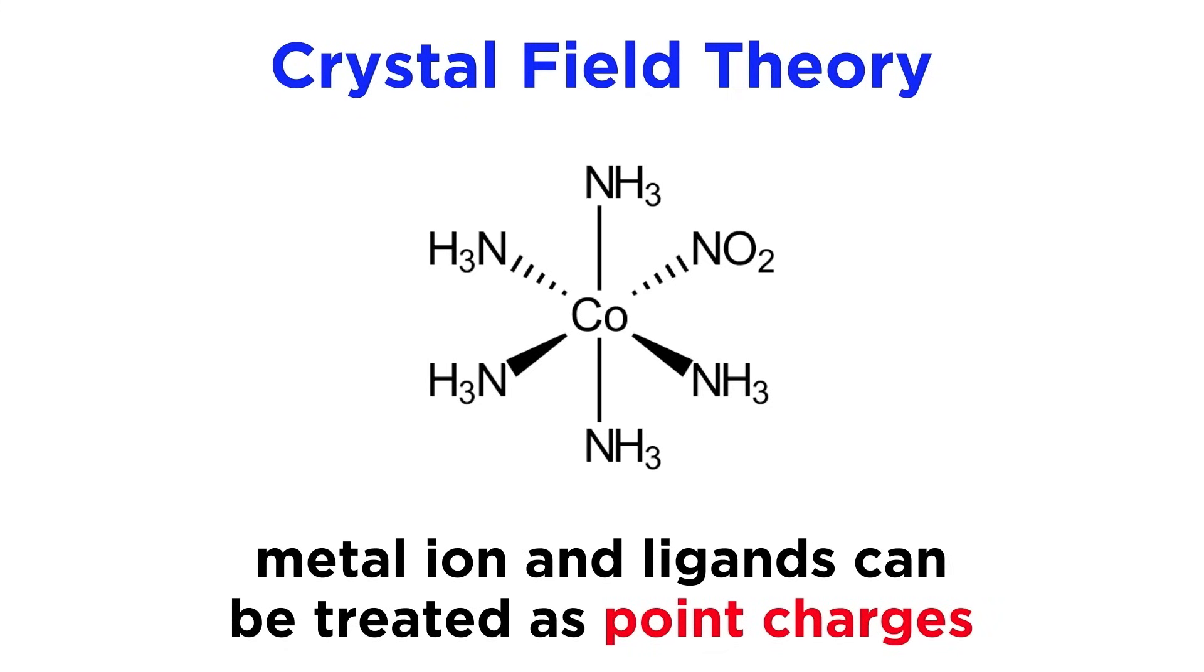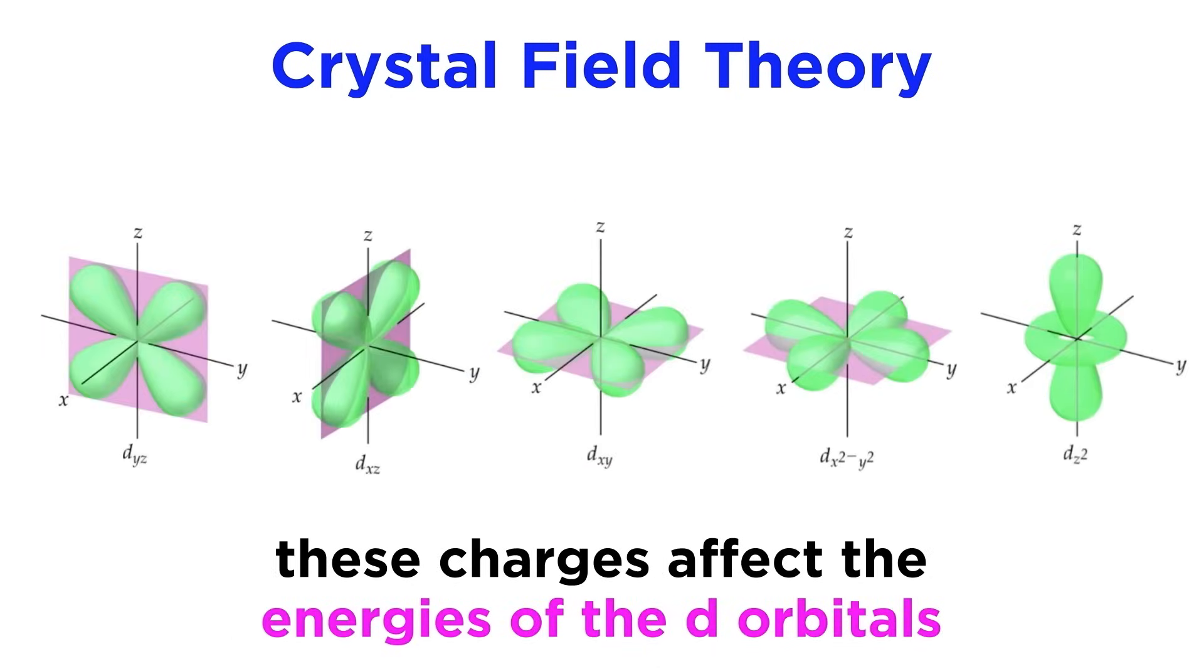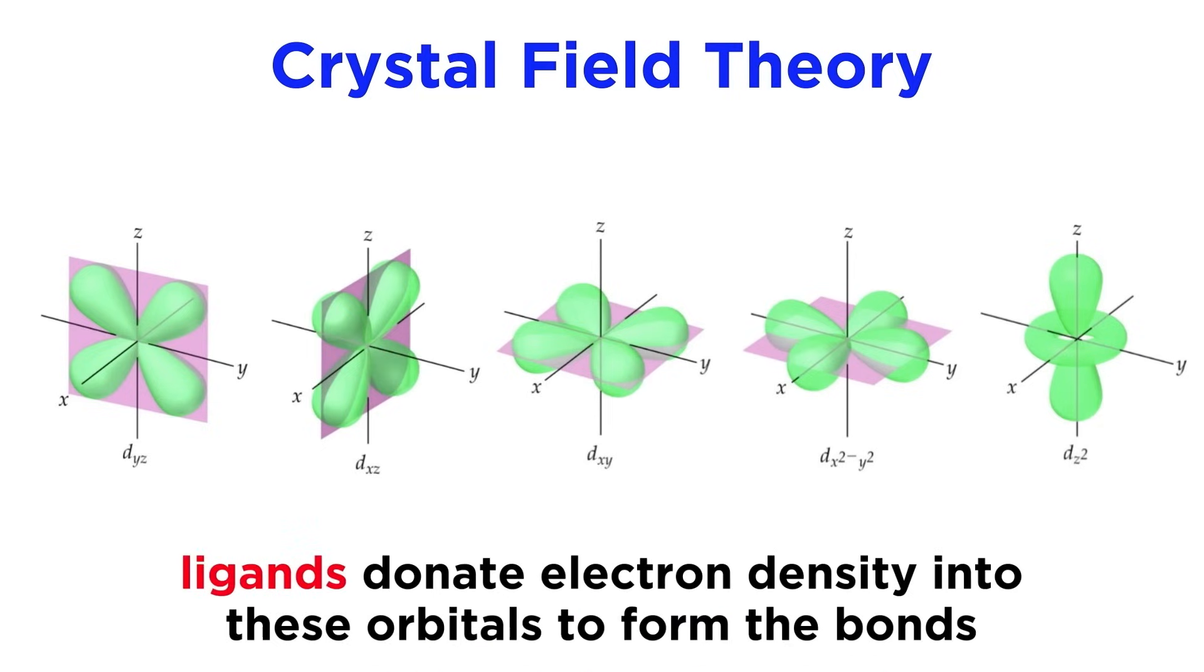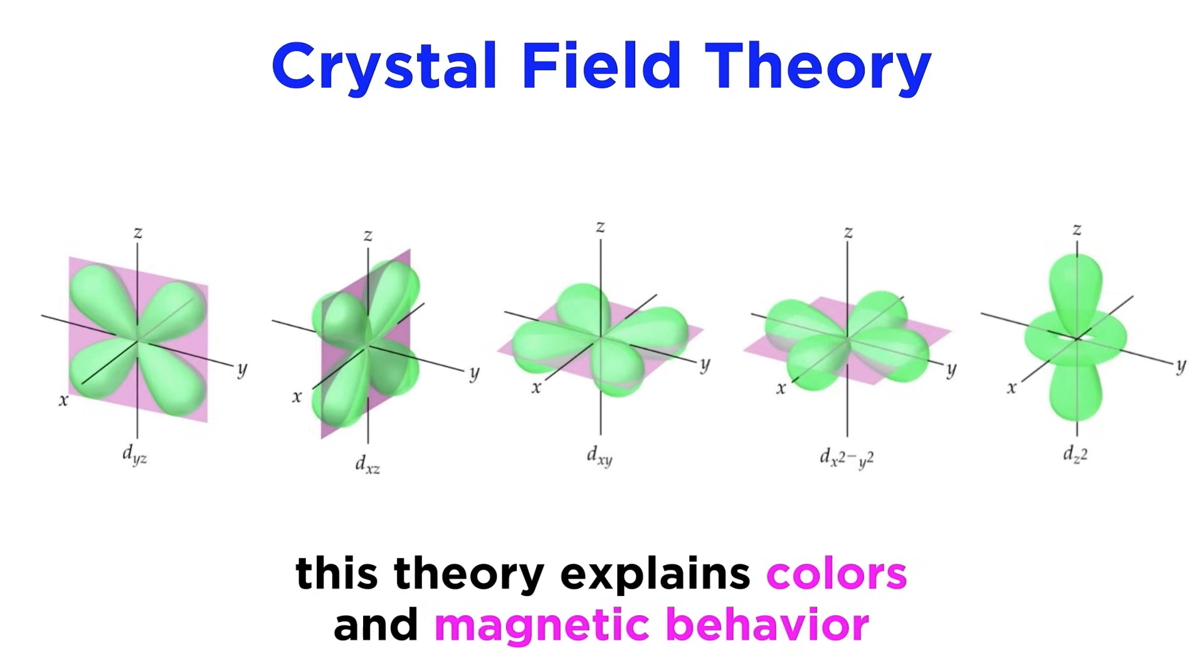Crystal field theory is based on the premise that the metal ion and the ligands can be treated as point charges, and the spatial arrangement of these point charges will affect the energies of the d orbitals for the central metal atom. These are the orbitals that ligands donate electron density into, so these are the chief concern for the model. This model, although incomplete just like VSEPR theory or valence bond theory, does wonderfully explain things like the colors, magnetic behavior, and structures that can be observed with coordination compounds.